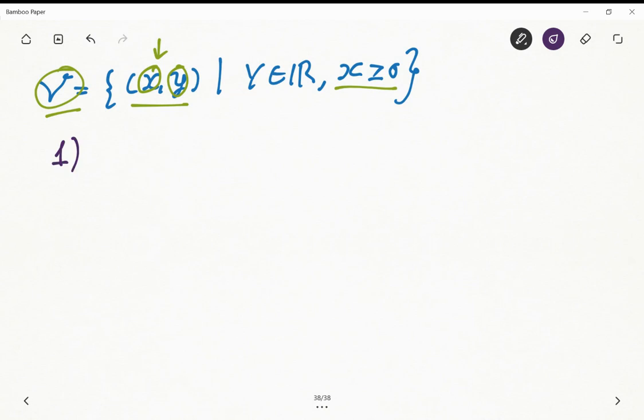First I'm going to define the null vector, the null or neutral or zero vector. In this case the neutral element of this possible vector space is going to be (0,0). Why?